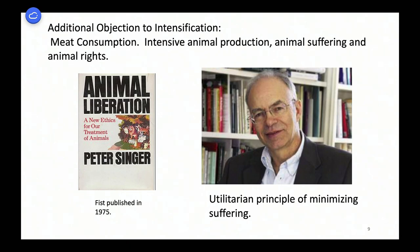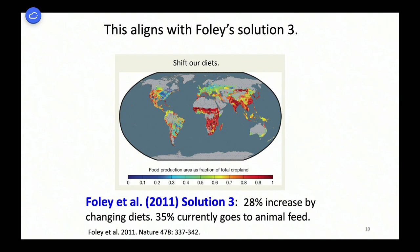An additional objection to intensification is that intensive animal production causes animal suffering and animal rights concerns. Peter Singer, a utilitarian with controversial views here at Princeton, has written extensively about this. We'll leave that as an additional argument for local and organic food. Singer's position aligns with Foley's solution number three — decreasing the proportion of cropland going to animal feed. Of course, Foley's 2011 solution predates the explosion of the meat substitute market, which we've discussed quite a bit.